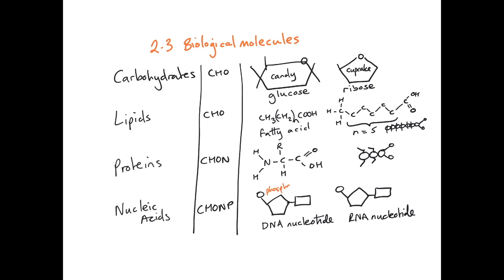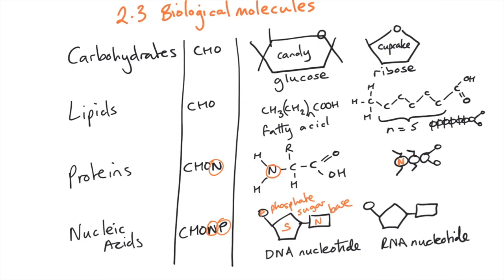The DNA nucleotide is made up of a phosphate, a sugar and a base and that base contains nitrogen. Hence the N and the P in the CHONP and the N in the CHON for proteins.